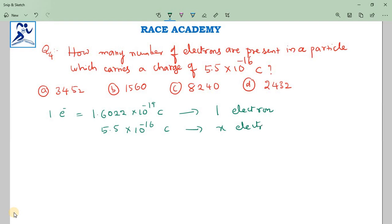X will become equal to 5.5 × 10^-16 × 1 divided by 1.6022 × 10^-19.